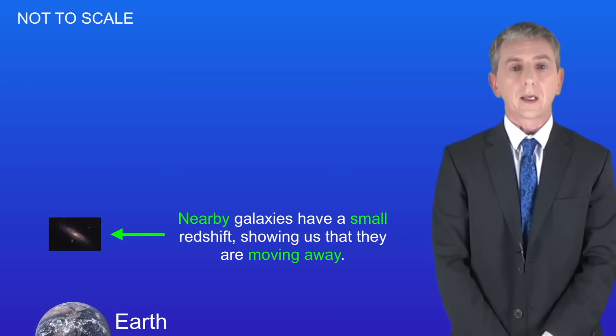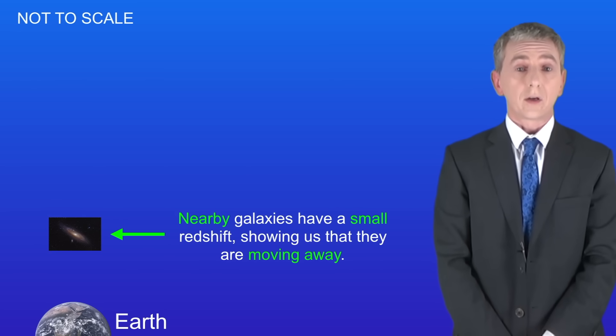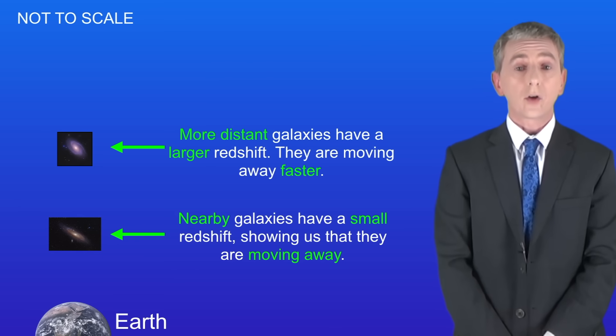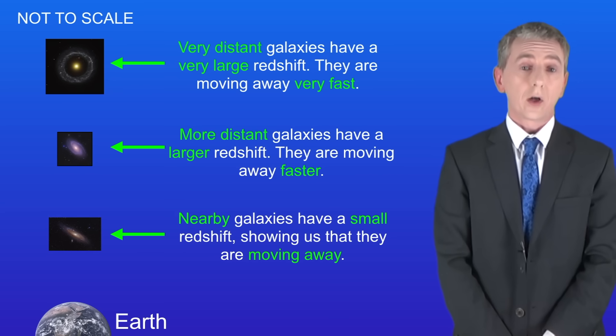I'm showing you this here. Nearby galaxies have a small redshift showing us that they're moving away. More distant galaxies have a larger redshift. They're moving away faster. And very distant galaxies have a very large redshift. They're moving away very fast.